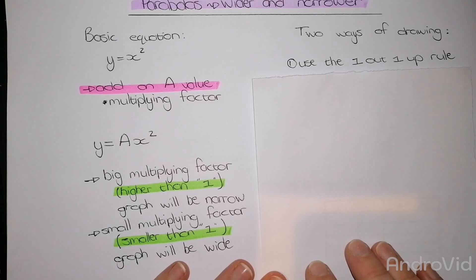By using the 1 out and 1 up rule, the basic equation will always be 1 out 1 up, 1 out 3 up, and 1 out 5 up.